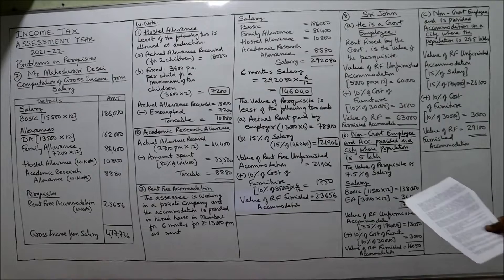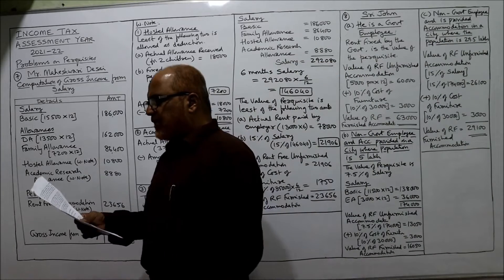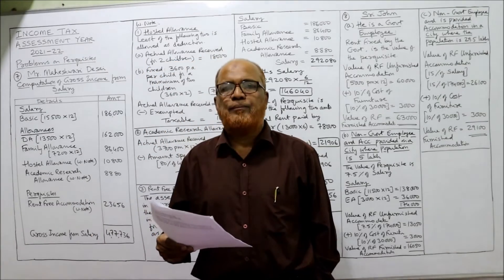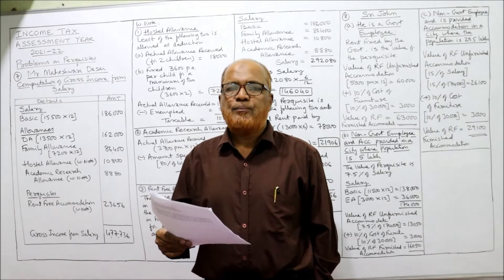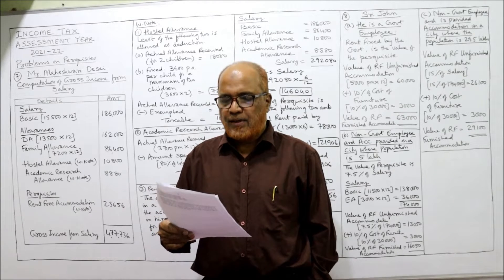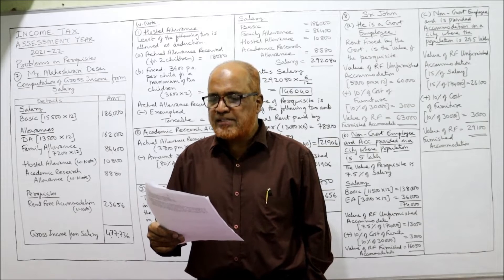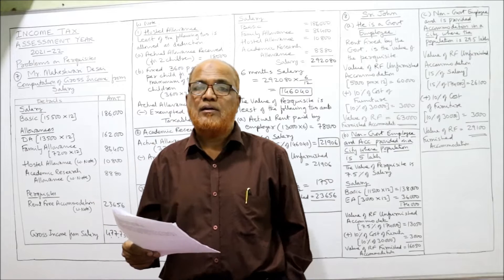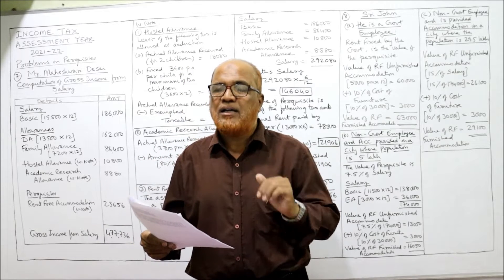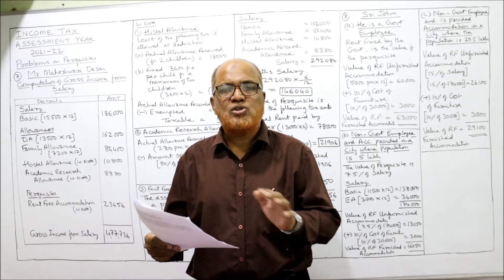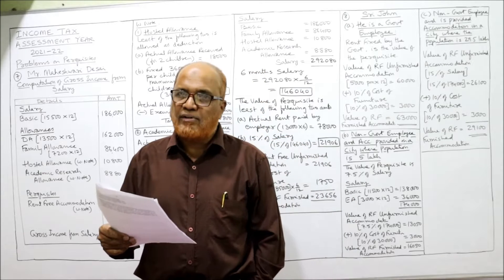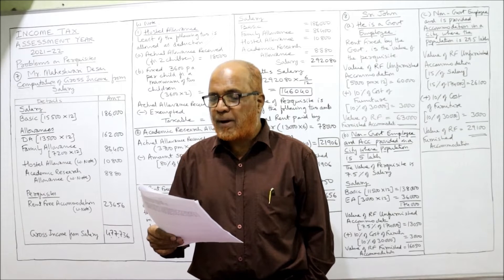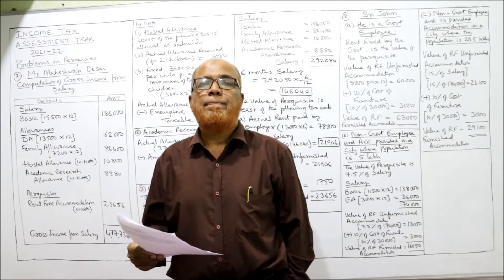Problem 7: Mr. Maheshwari Desai is working as a business development manager in a private company — he is a non-government employee. Basic pay is 15,500 per month. DA is 13,000 per month, but nothing is given about retirement benefit, so we assume it does not enter for retirement benefit. Family allowance is fully taxable at 7,200 per month.